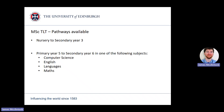There are a number of different pathways available on the MSc Transformative Learning and Teaching program. The most common pathway is the nursery to secondary year three, which allows you to teach from the nursery stage right up to secondary year three in high schools in Scotland. There are also more specialised streams which allow you to focus on a dedicated subject and teach from primary five up to secondary year six. We offer these routes in computer science, English, languages, and maths.